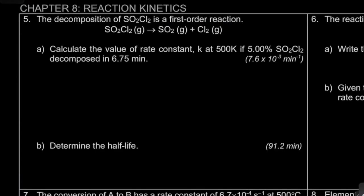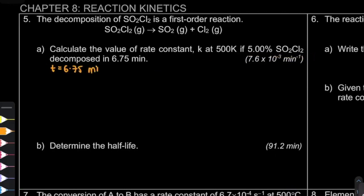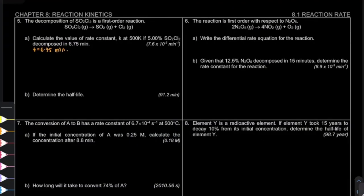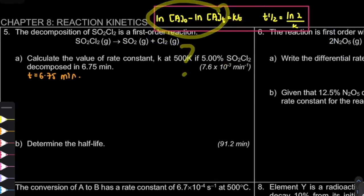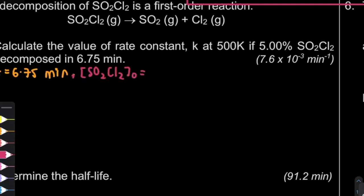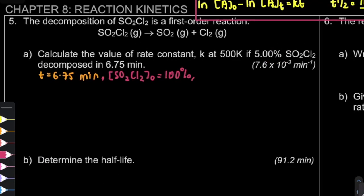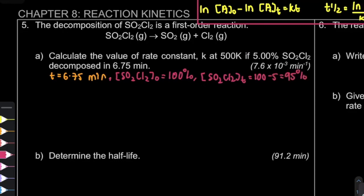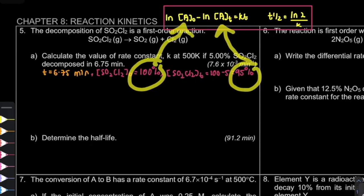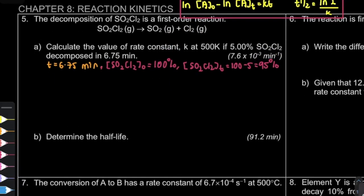Let's continue with example number 5, a first-order reaction. The information given includes time = 6.75 minutes. The question asks for K, but we don't directly have [A₀] and [Aₜ]. The hint is that 5% has decomposed. So the initial is 100% and the concentration at time 6.75 min is 100% − 5% = 95%.